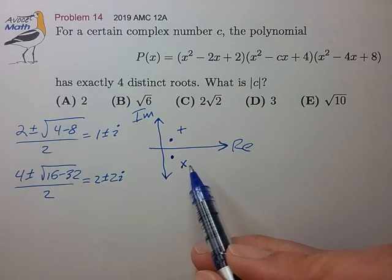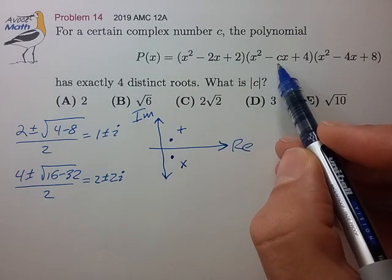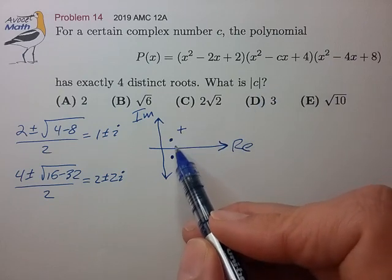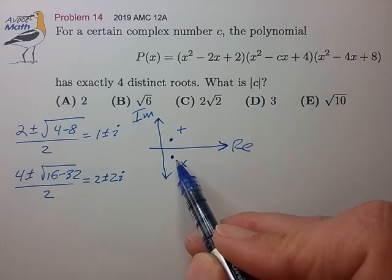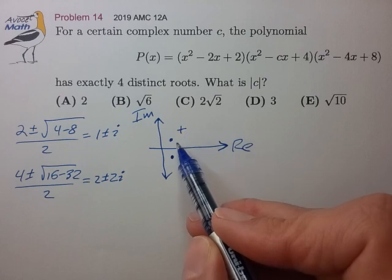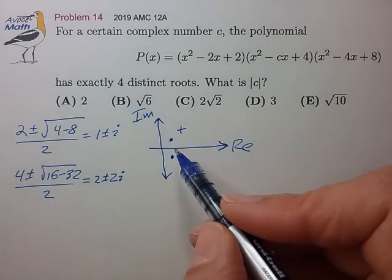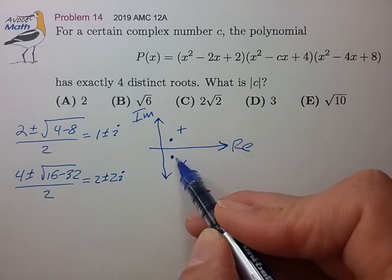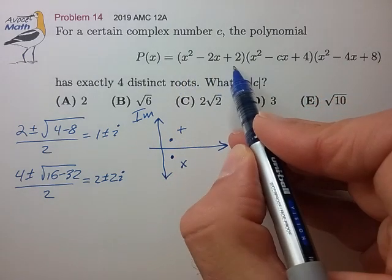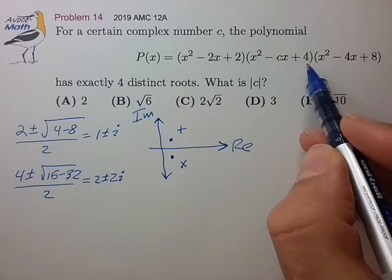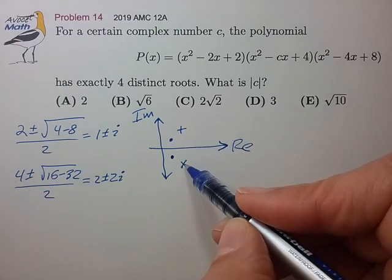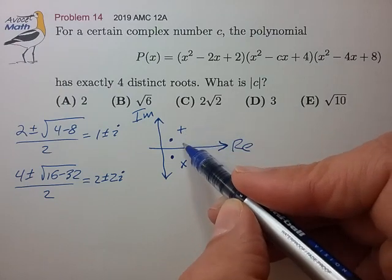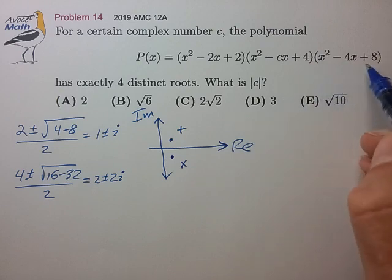And it looks like we're trying to determine this parameter c so that we duplicate one pair of these roots. So now let's see which pairs we can duplicate. We can't duplicate this pair because if we duplicate this pair we're just gonna reconstruct this factor, and that doesn't look like it's possible. And likewise we can't duplicate this pair because we'll just duplicate this last factor.